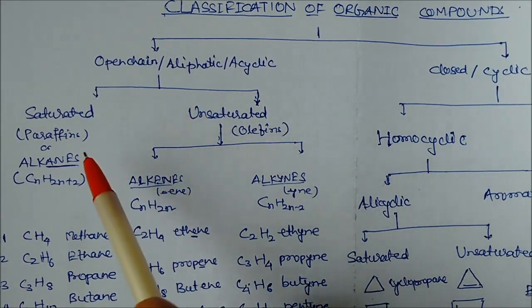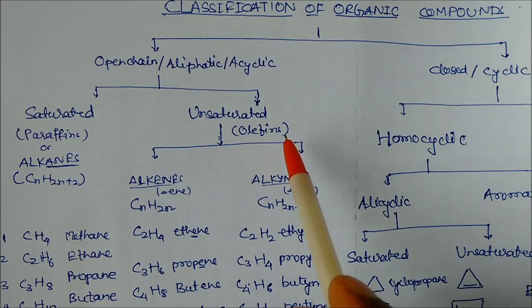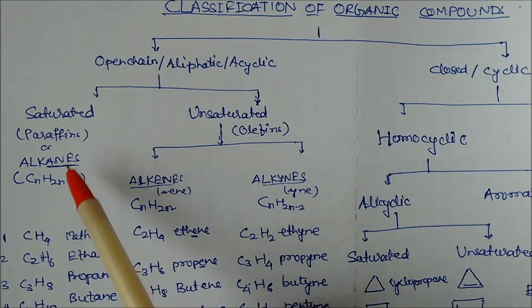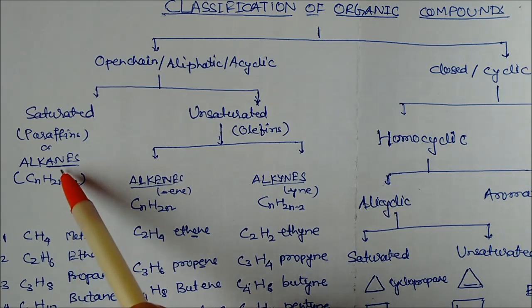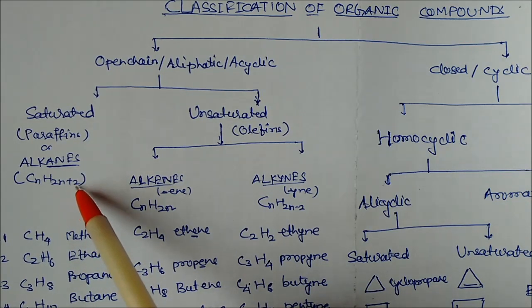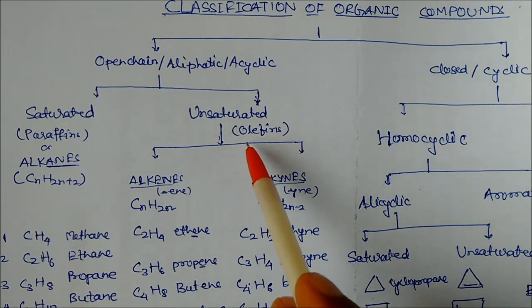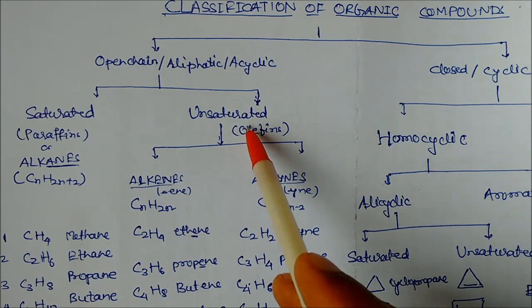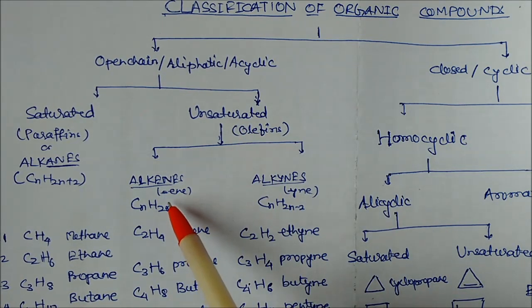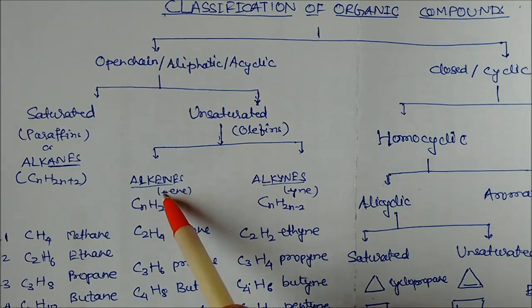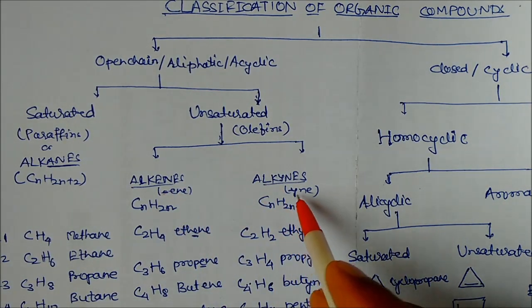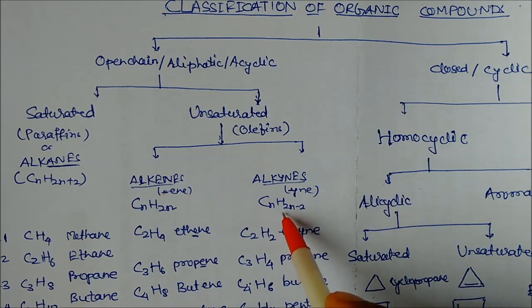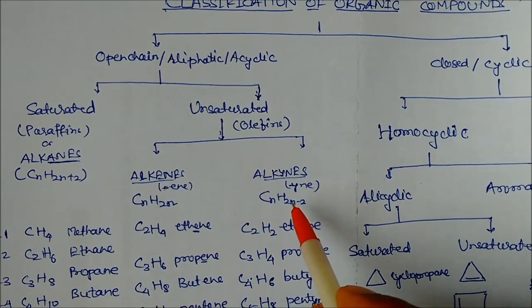Open chain is further divided into two parts: saturated and unsaturated. Saturated compounds are also called paraffins or alkanes; the general formula of alkane is CnH2n+2. Unsaturated compounds are called olefins and are more reactive. The general formula for alkene is CnH2n, with the suffix '-ene'. For alkyne, the suffix is '-yne' and the general formula is CnH2n-2.